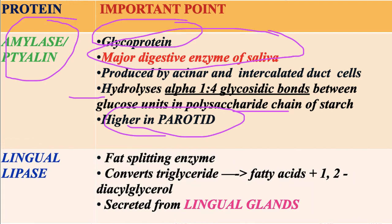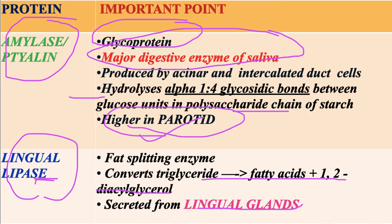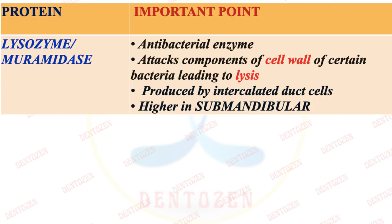The next important protein is lingual lipase. The name tells us that lingual glands secrete it, and lipase means fat-splitting enzyme. It converts fat triglycerides into fatty acids and 1,2-diacylglycerol. So amylase (also known as ptyalin) and lingual lipase are the two important digestive enzymes in saliva.